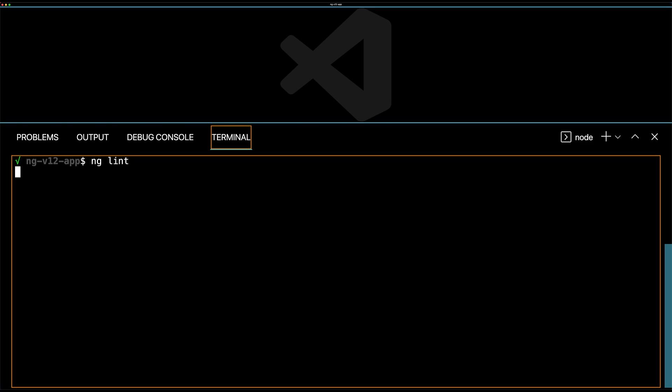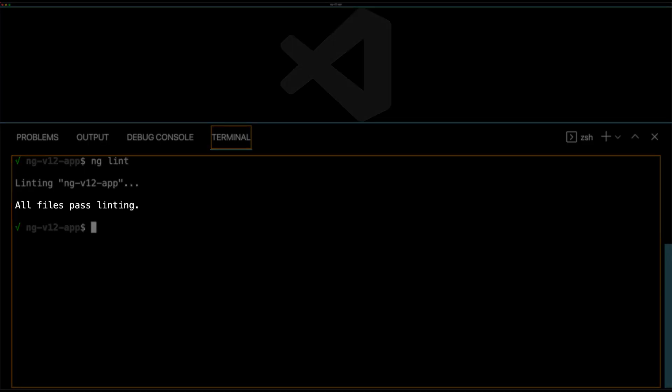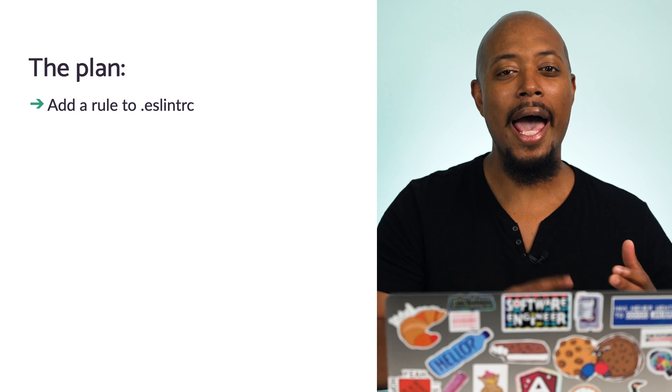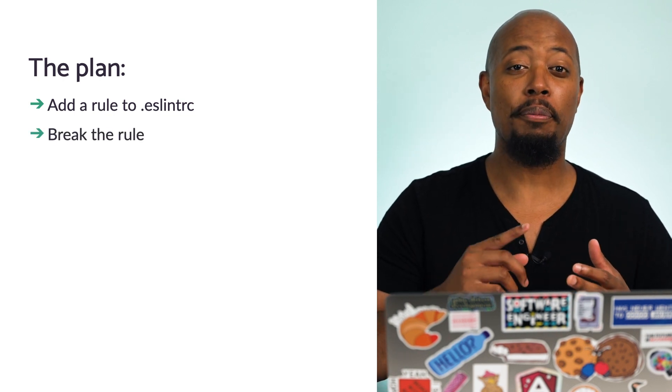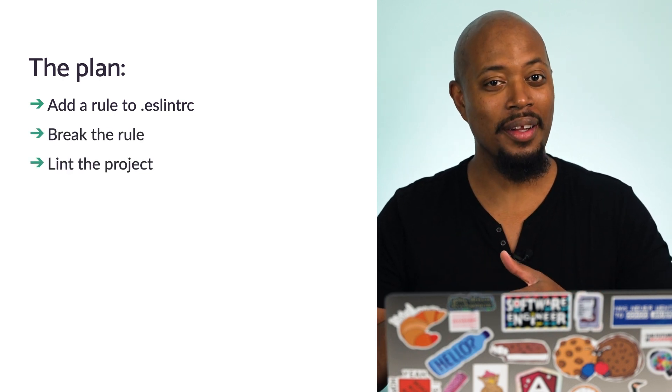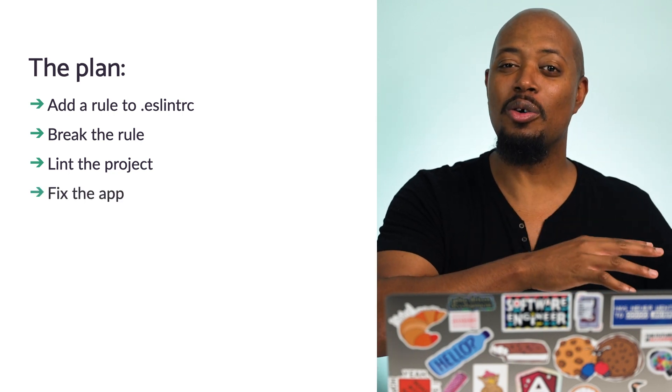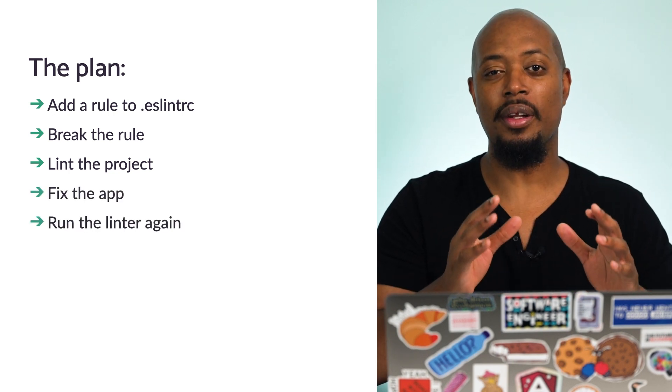Back to the code we go. Let's try out the ng lint command for this project. Success! Our project is officially linted. Things look great, and we can configure even more rules to customize the configuration. Here's what we'll do: we'll add a rule to ESLint, we'll break that rule, we'll run the linter, then we'll go back and fix the code, and finally we'll run the linter again.